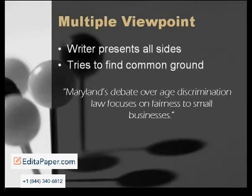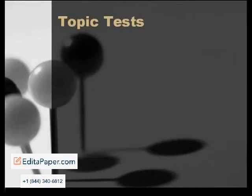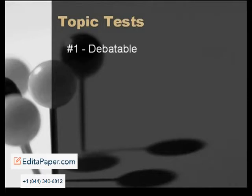The writer will present both sides of this debate. Once you've chosen the kind of topic you will examine and the kind of paper you will write, single or multiple viewpoint, it's time to brainstorm a list of topics. As you begin sorting out these preliminary ideas, try applying these three tests. A valid, workable topic will pass all three tests, making it debatable, plausible, and consequential.